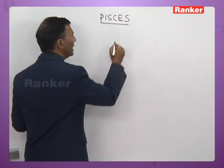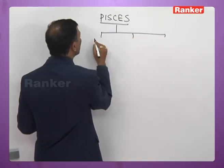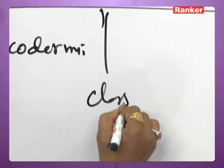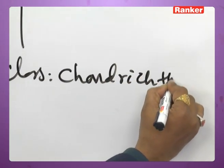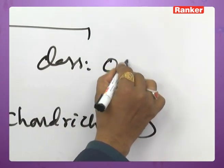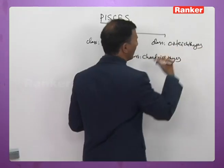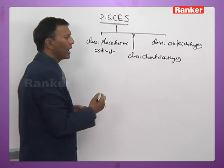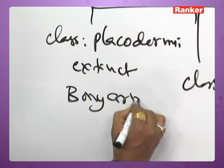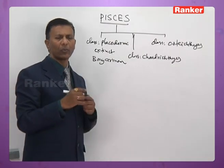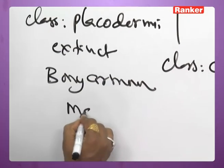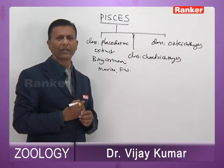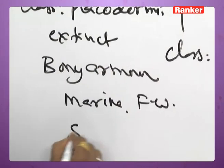Pisces includes three important classes: class Placodermi, class Chondrichthyes, and class Osteichthyes. The Placoderms are extinct fish in which the entire body is enclosed in a bony armor. The scales and bony plates are fused to form a rigid shell called bony armor. They are both marine and freshwater. Paired fins are absent; they have only unpaired or median fins.